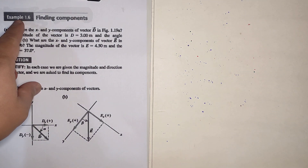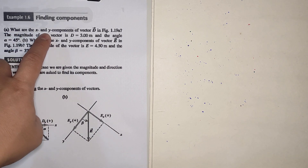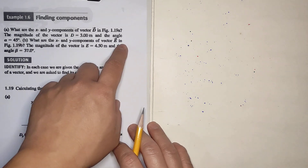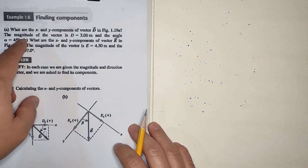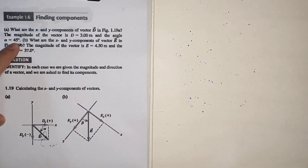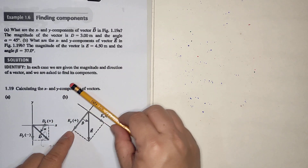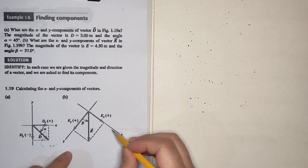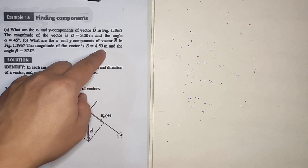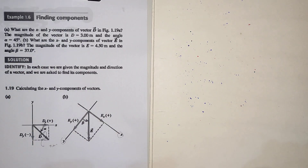Let's answer Example 1.6: finding components. Letter A: what are the x and y components of vector D? From figure 1.19a, the magnitude of vector D is 3 meters and the angle alpha is 45 degrees. Letter B: what are the x and y components of vector E? The magnitude is 4.5 meters and the angle beta is 37 degrees.